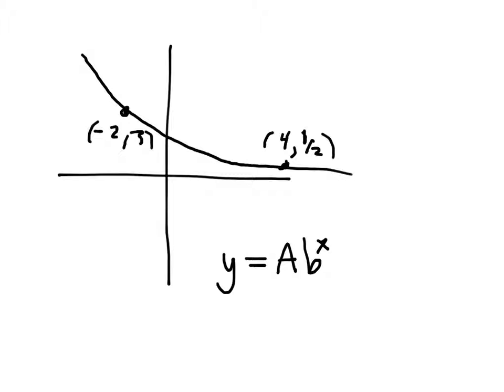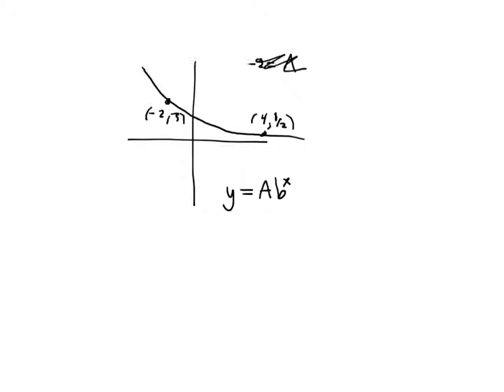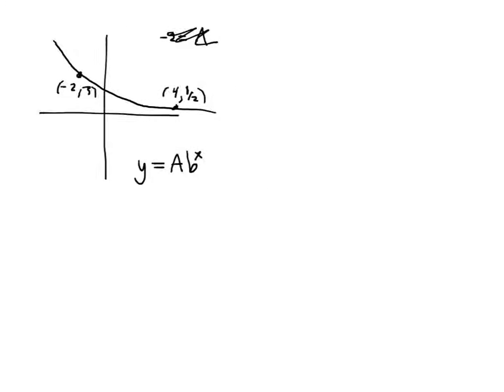So, you write down, like, negative 2 equals a... whoops, that's wrong. B is to the... yeah. Let's do this. So, you have 3 equals a, b to the negative 2. Yeah. All right, and 4 equals... nope, I'm just totally off my rocker. So, 1 half equals a, b to the 4th. Right?